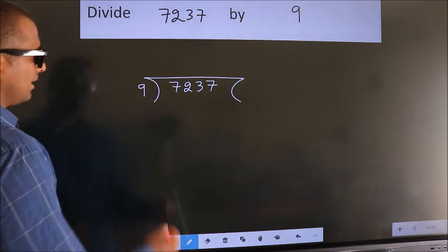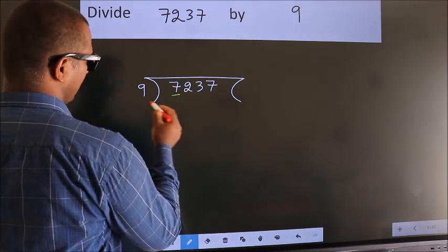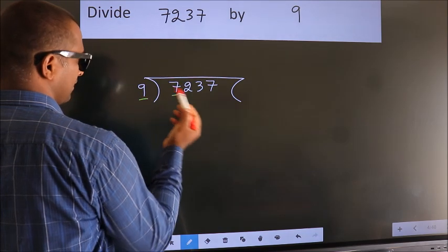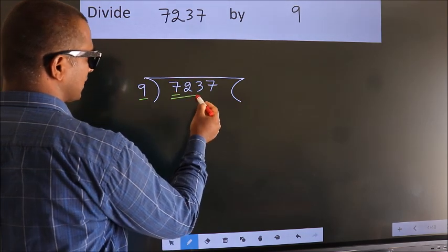Next. Here we have 7, here 9. 7 smaller than 9. So, we should take 2 numbers, 72.